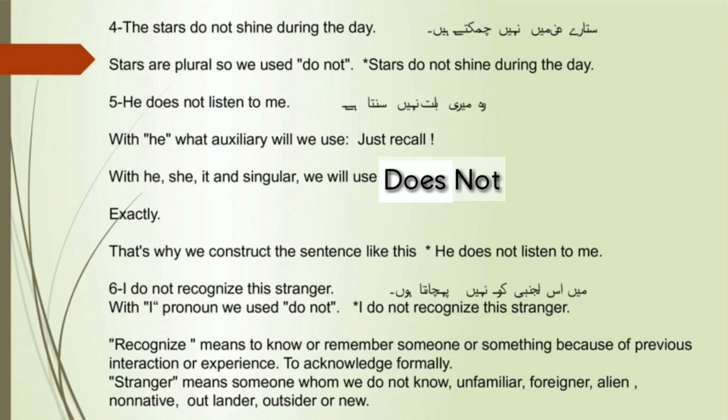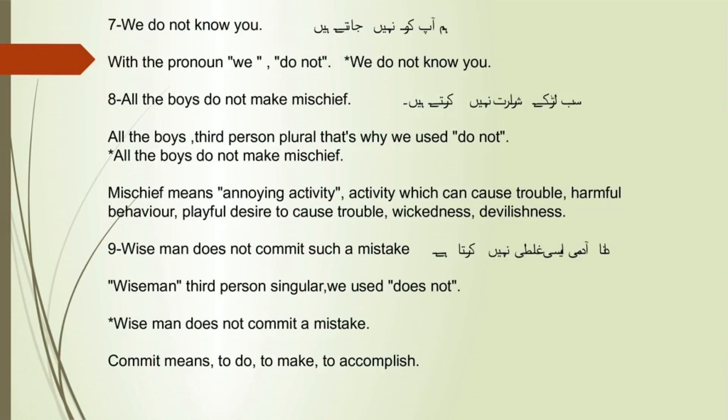Stranger means someone whom we do not know — unfamiliar, foreigner, alien, non-native, outlander, outsider, or new. Sentence 7: We do not know you. With the pronoun 'we,' the auxiliary we are going to use is 'do not.' We do not know you.